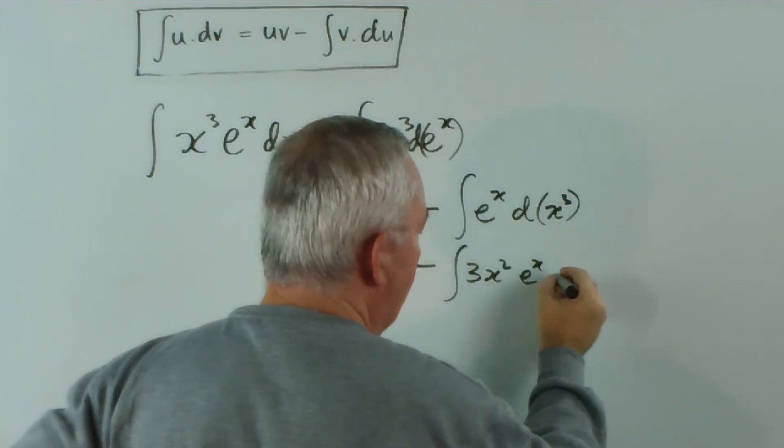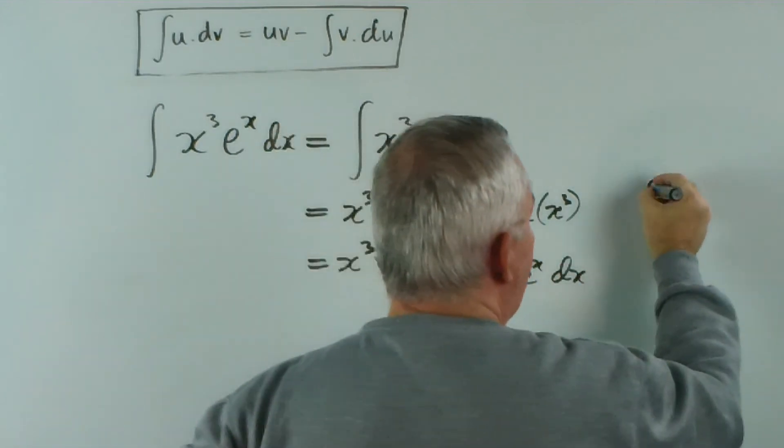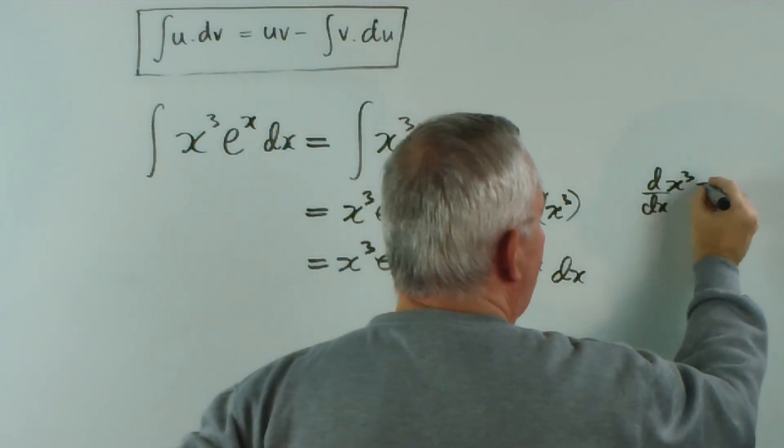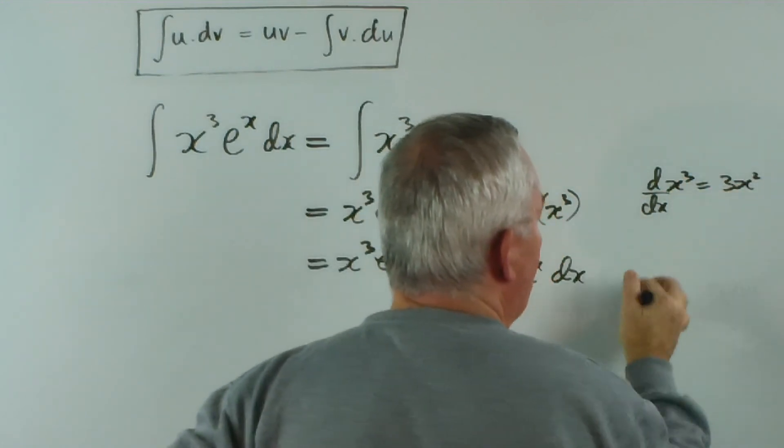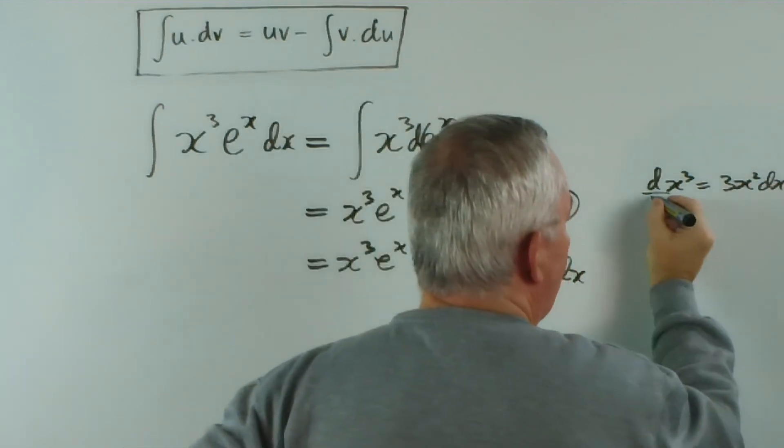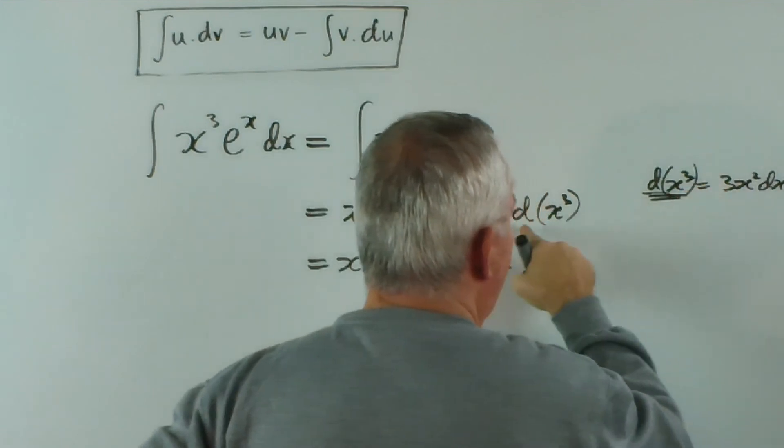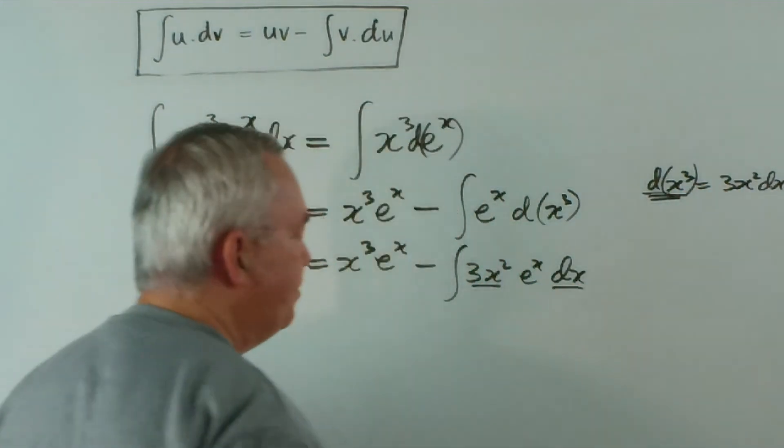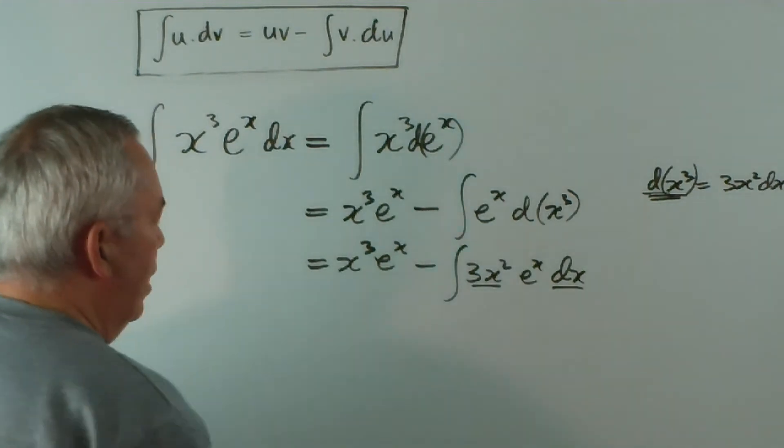I'll leave the e^x there - dx. We can check this out. We can check this out. The derivative of x^3 is 3x^2 and multiply both sides by dx. So, that derivative is 3x^2 dx, 3x^2 dx.